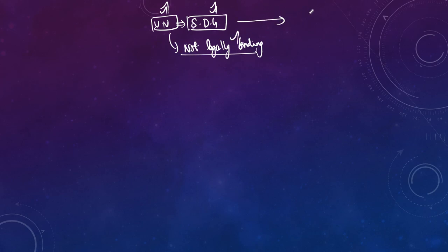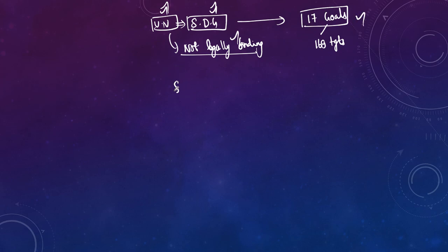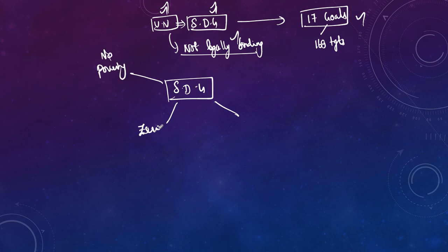Under sustainable development goals, we are required to achieve 17 goals. For each goal, many targets have been set, and overall there are 169 targets under the 17 goals. Among these 17 goals, there are three main components considered to be the heartbeat of SDG: first, no poverty; second, zero hunger; and third, good health conditions for people.